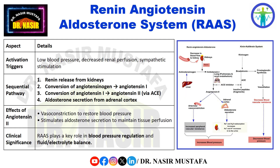The renin-angiotensin-aldosterone system (RAS) is activated by low blood pressure, decreased renal perfusion, or sympathetic stimulation. This system works sequentially: renin release → angiotensin I → conversion to angiotensin II → aldosterone secretion. Angiotensin II also causes vasoconstriction, helping restore blood pressure and maintain tissue perfusion.